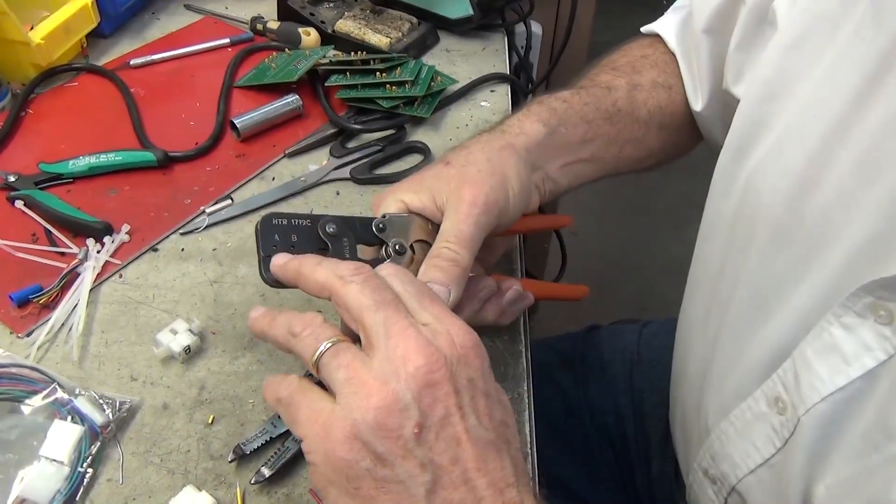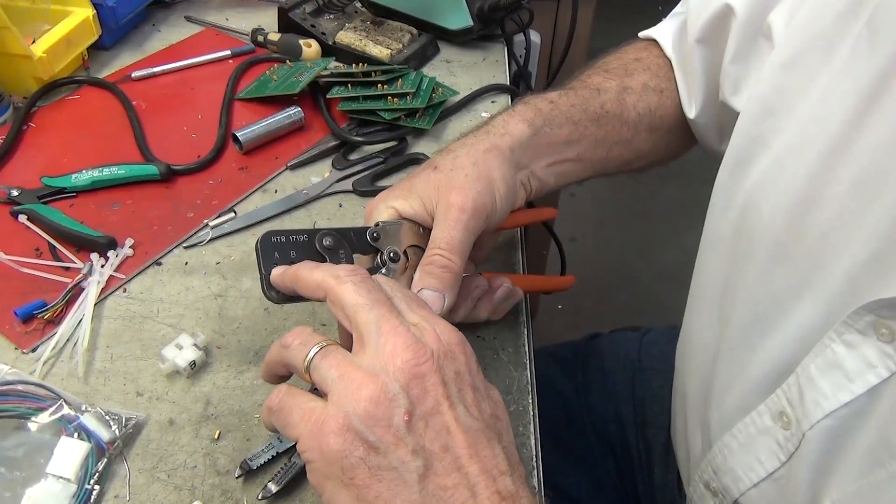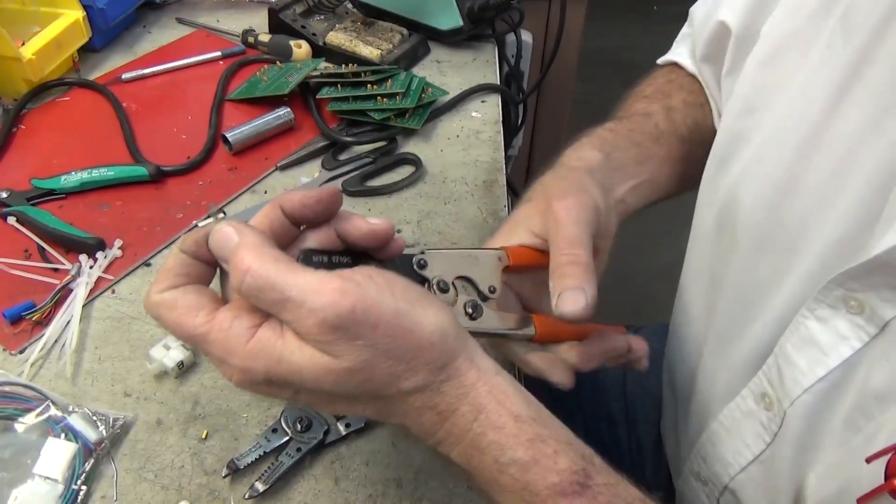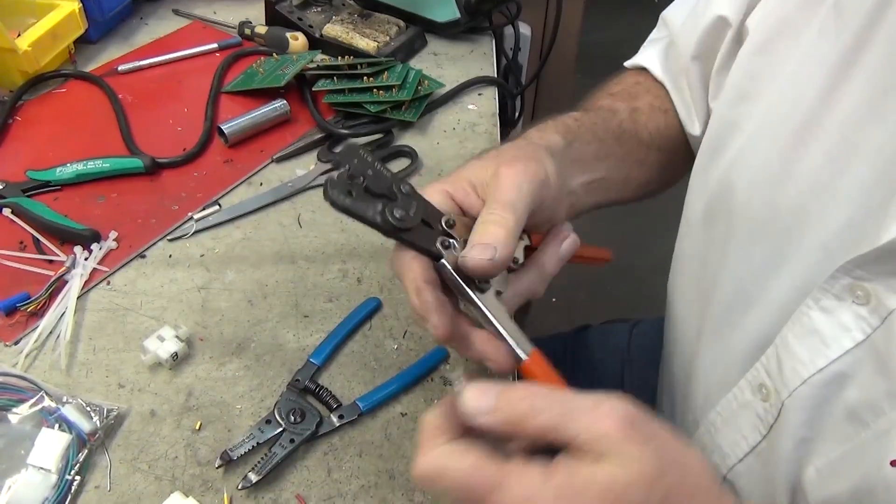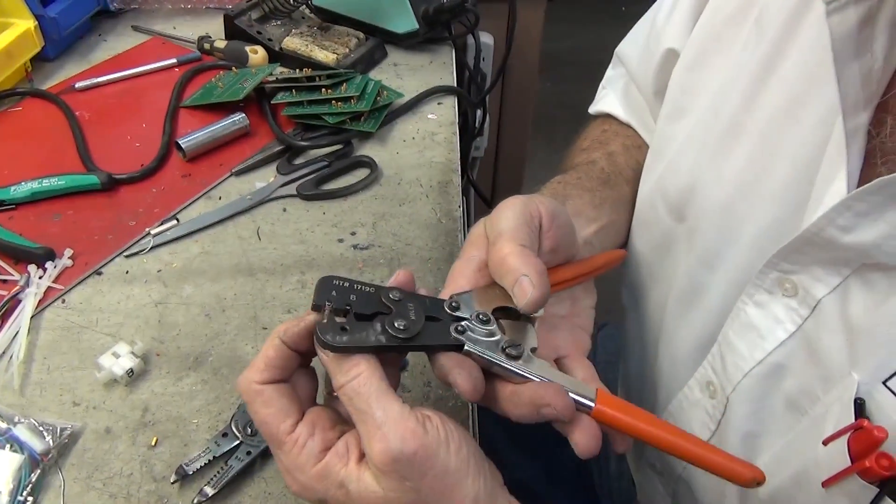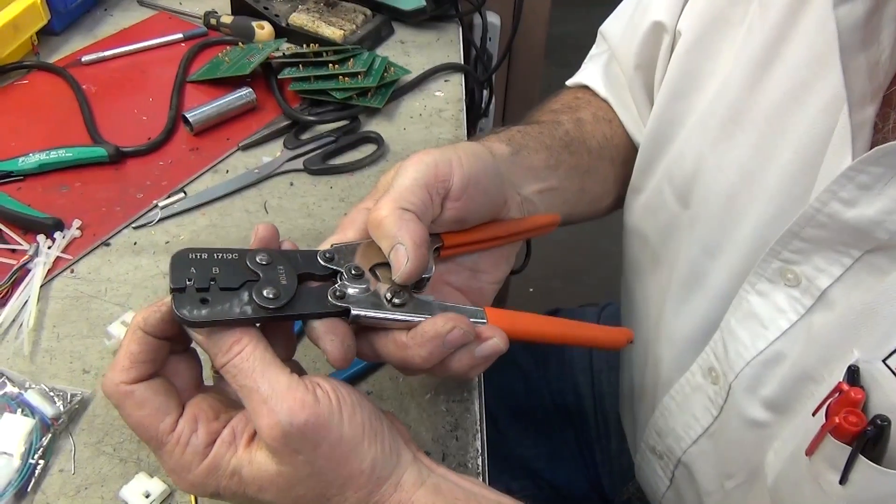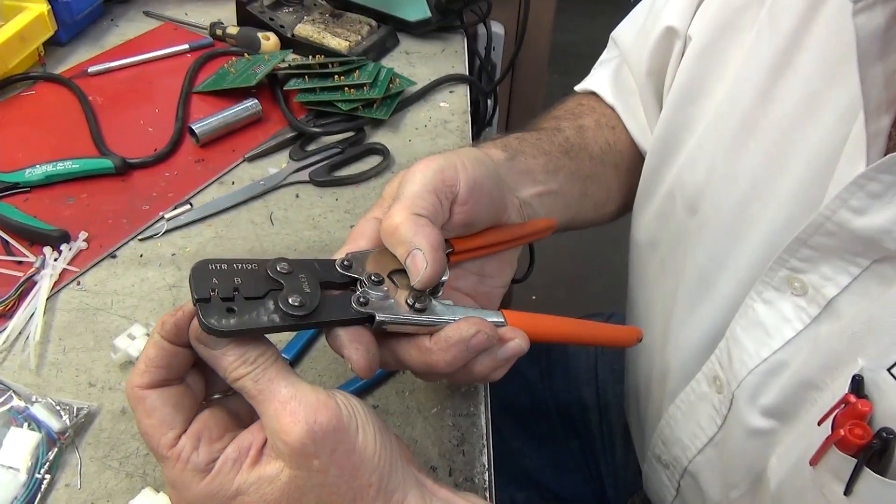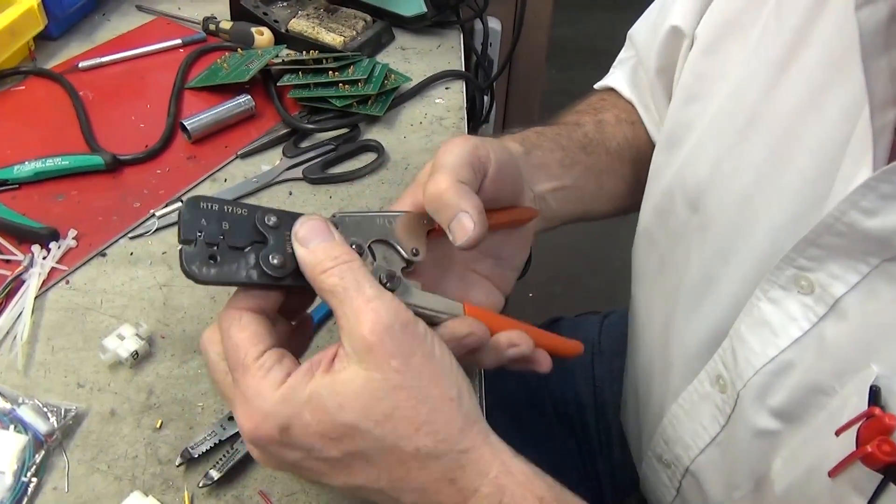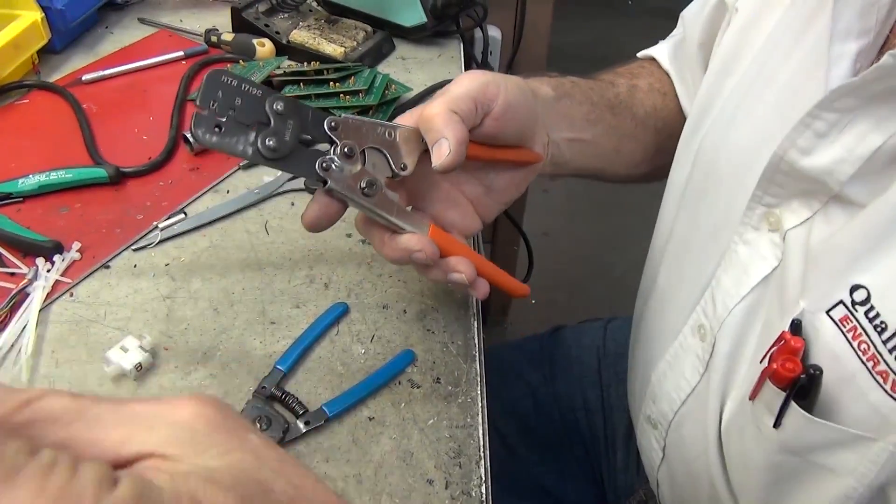When you close this up, you'll see that this one is a little bit smaller. The A is smaller than the B, so you're going to use the A because this is small wire. Have this nice and flush with the end—you can see you can just flush it up with the end. Then you're going to take this wire.